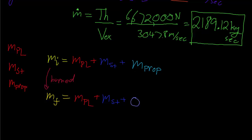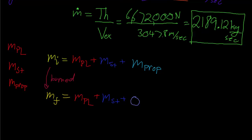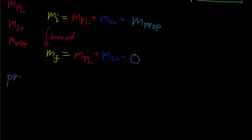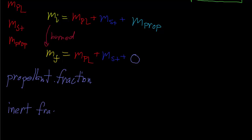We can use these two equations to create two new quantities: the propellant fraction and the inert fraction. The propellant fraction is just the mass of the propellant divided by our initial mass. This makes sense — we're taking the fraction of propellant from our total mass, since the initial mass can be thought of as our total mass.